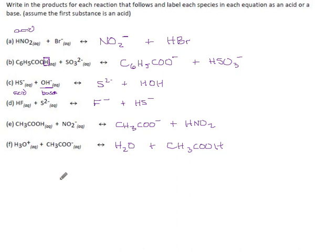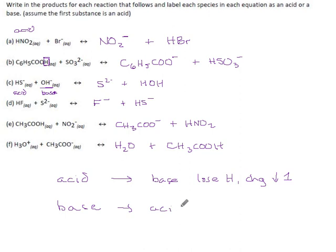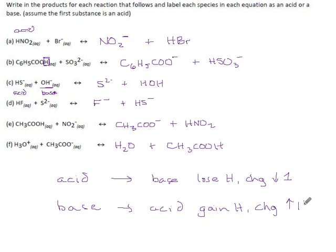So, as a summary: if you are an acid turning into your conjugate base, you lose an H and your charge goes down by 1. If you are a base turning into your conjugate acid, you gain 1 hydrogen, and for each hydrogen that you gain, your charge goes up by 1 — because hydrogens carry positive charge, and if you gain a hydrogen, you gain its charge as well.